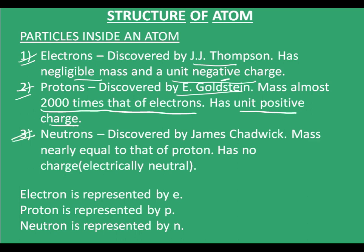Neutrons were discovered by James Chadwick. The mass of neutrons is nearly equal to that of a proton, and neutrons have no charge — that is, they are electrically neutral. Electrons are represented by the symbol E, protons by the symbol P, and neutrons by the symbol N.